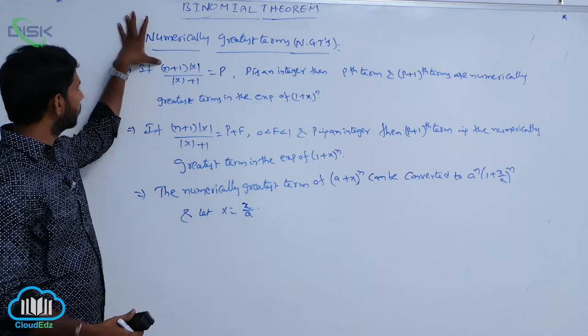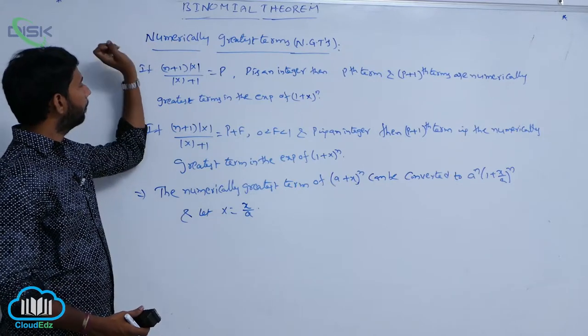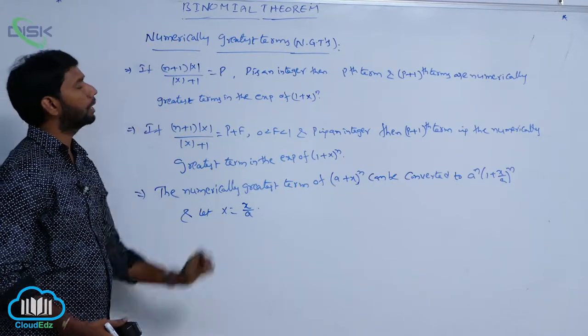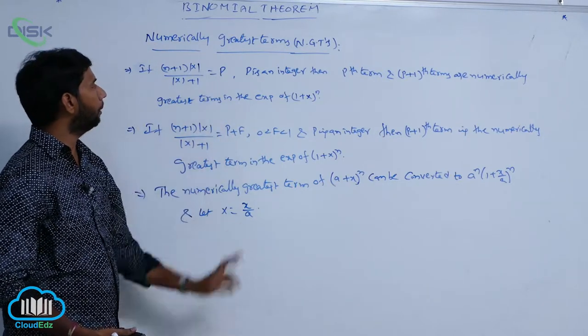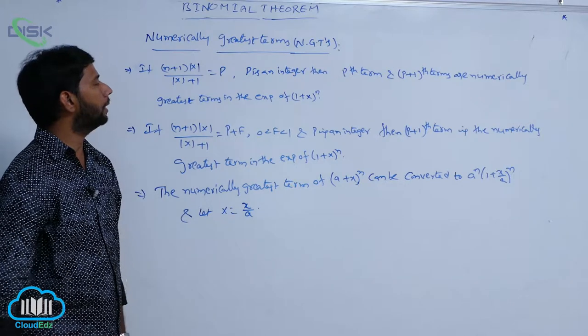The first case is: if (N + 1) times mod X divided by (mod X + 1) equals P, where P is an integer.